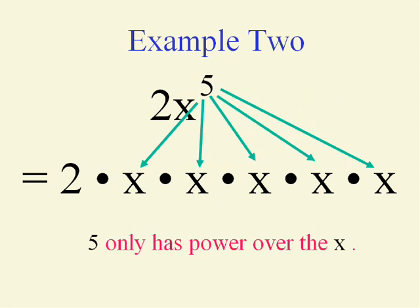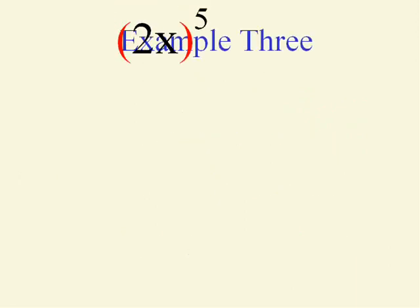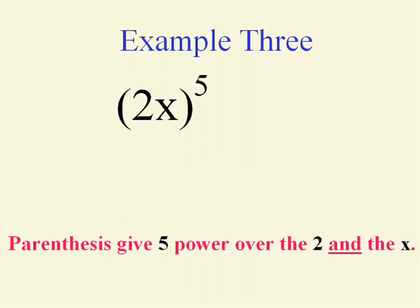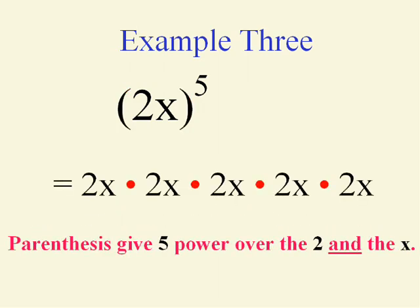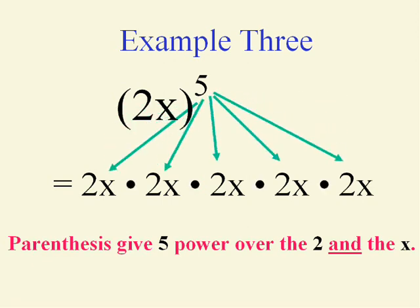So you have to write five x's, and you only have one two. That five only has power over the x's — unless we have parentheses. Parentheses add power to the five, meaning we're going to have this entire two x multiplied five times.